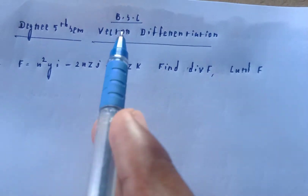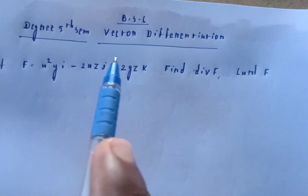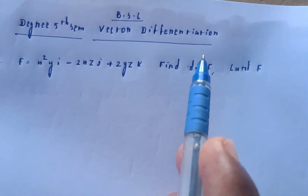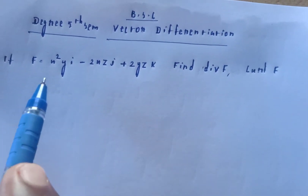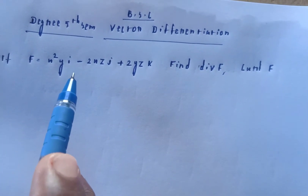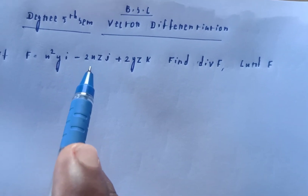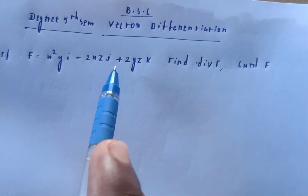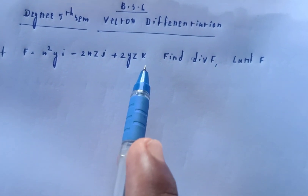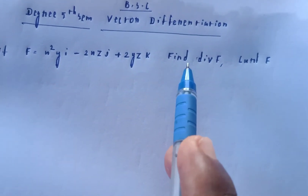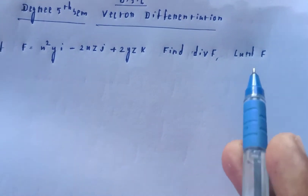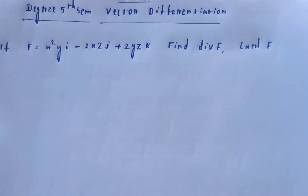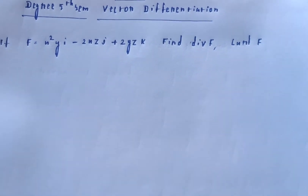Welcome to my channel. BSE degree fifth semester, vector differentiation. If f is equal to x squared y i minus 2xz j plus 2yz k, find the divergence of f and curl of f.